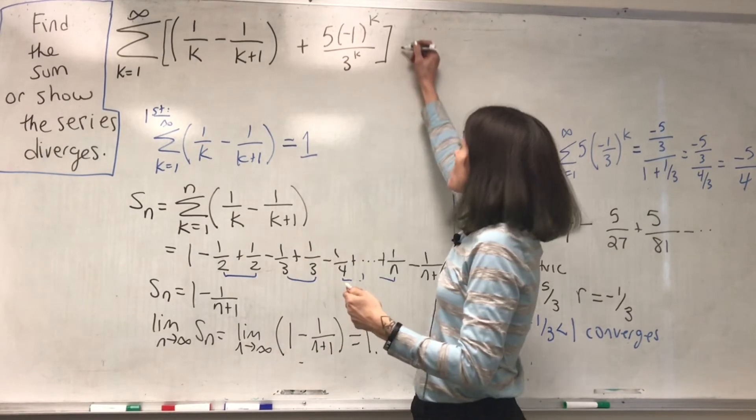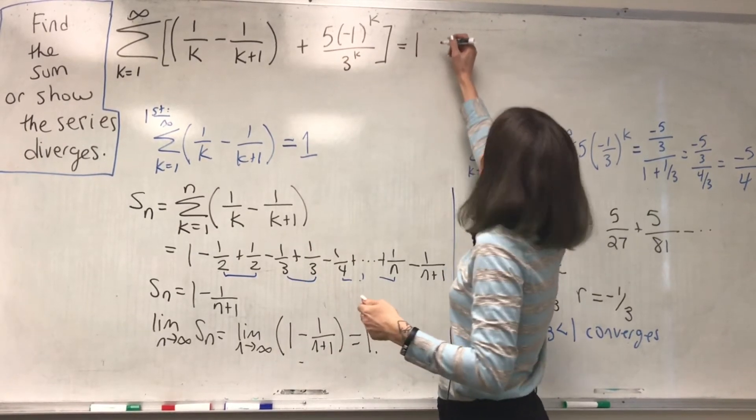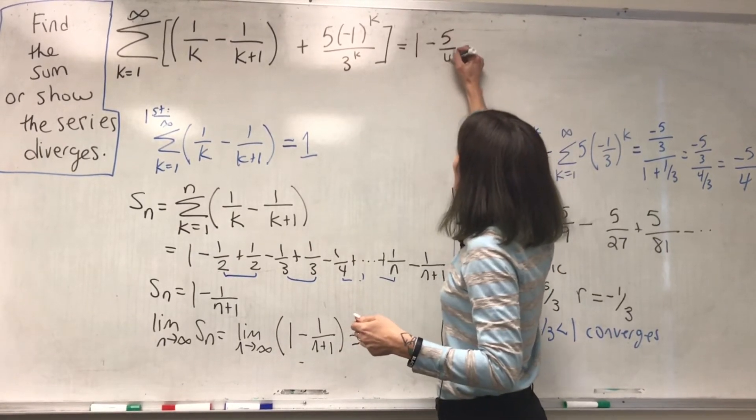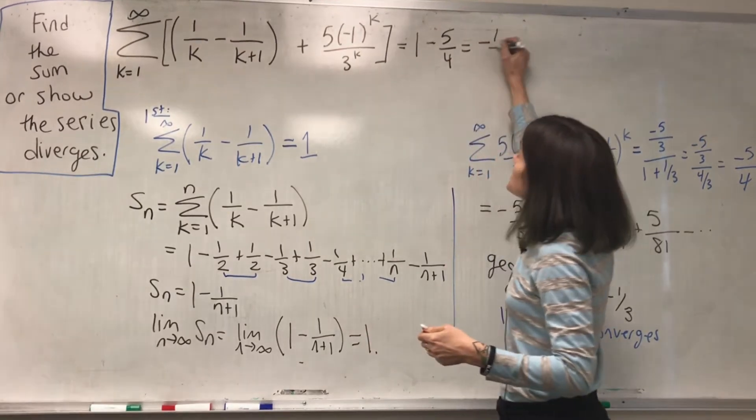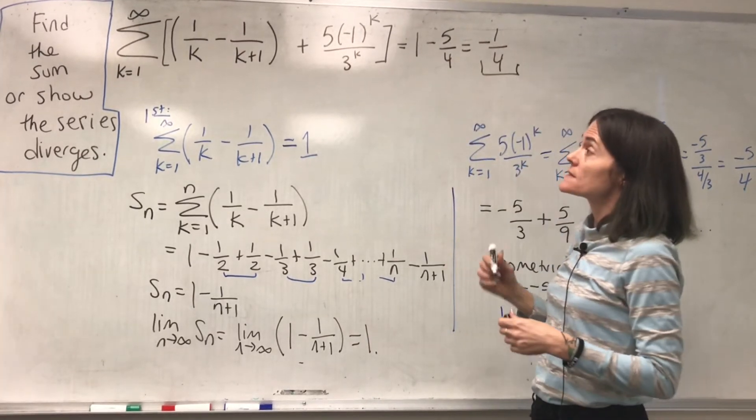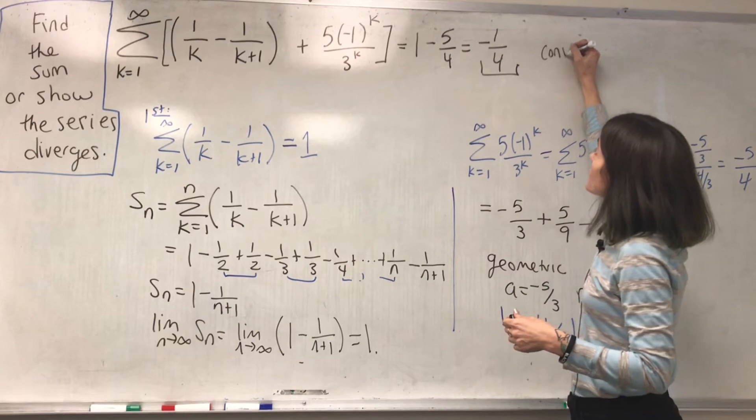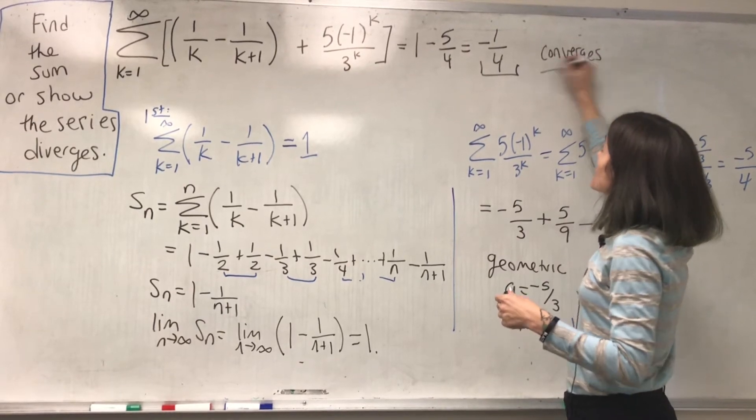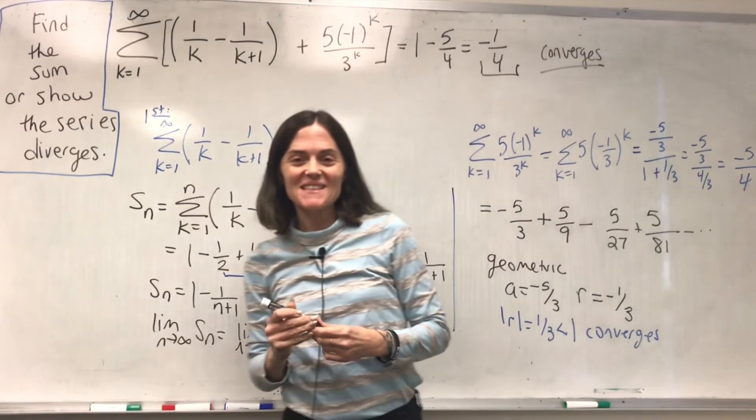We know the sum here. This is 1 minus 5 over 4. The answer is negative 1 over 4. This is a convergent series, and we have calculated the exact value of the sum.